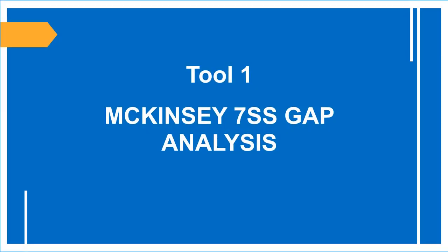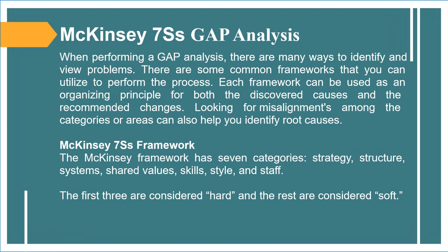McKinsey 7S Gap Analysis. When performing a gap analysis, there are many ways to identify and view problems, and there are common frameworks you can utilize. Each framework can be used as an organizing principle for both discovered causes and recommended changes. Looking for misalignments among categories can also help identify root causes. The McKinsey 7S Framework has seven categories: strategy, structure, systems, shared values, skills, style, and staff. The first three — strategy, structure, and systems — are considered hard elements, and the remaining four are considered soft elements.